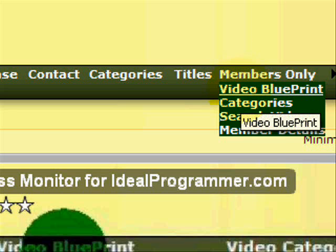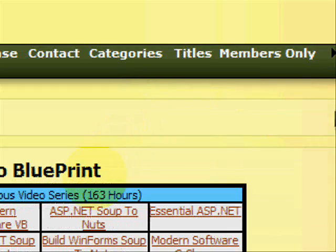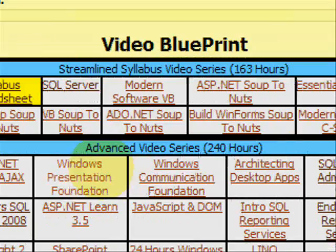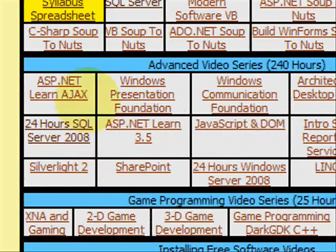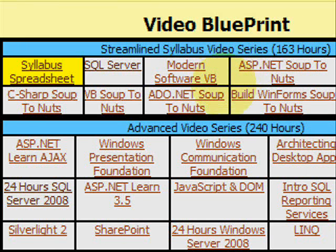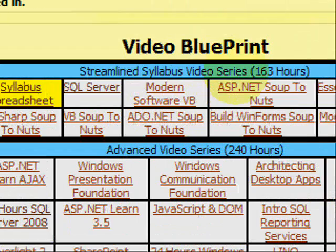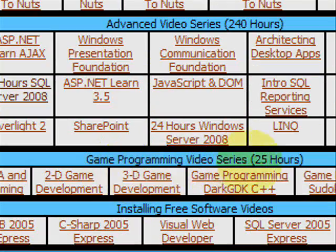You can click on the Video Blueprint, and this will give you a syllabus for all the videos that you can watch. If you want descriptions of the individual courses, that's what the Video Blueprint is good at — giving you more details about each video. It's broken up into a Streamland Syllabus Series, an Advanced Video Series, and a Game Programming Video Series.